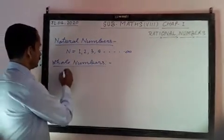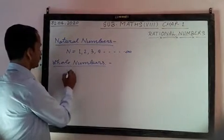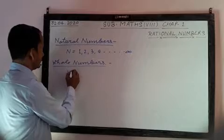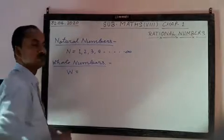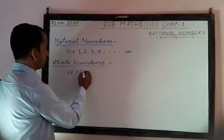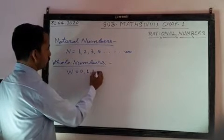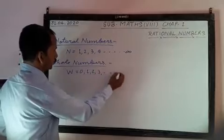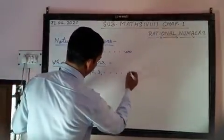Our whole numbers are also represented by W. These whole numbers are started from 0, 1, 2, 3, and goes endlessly, indefinitely.